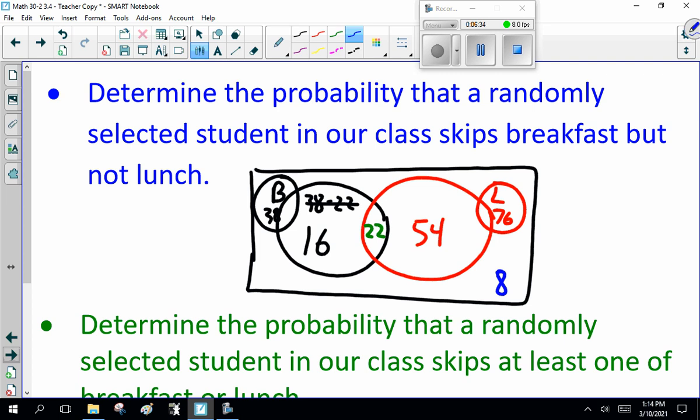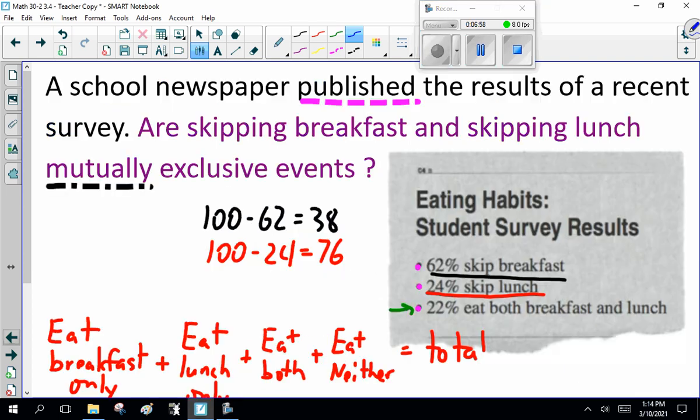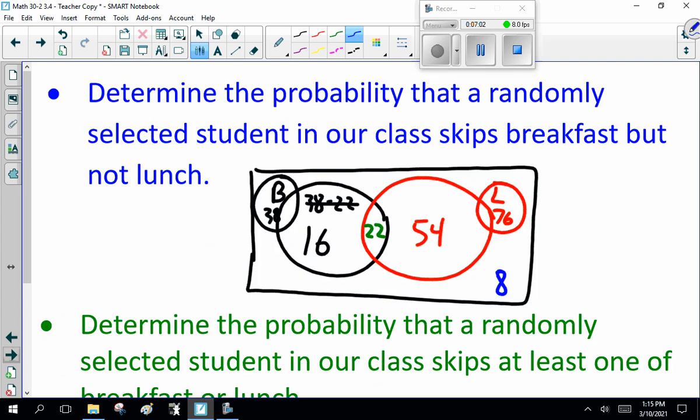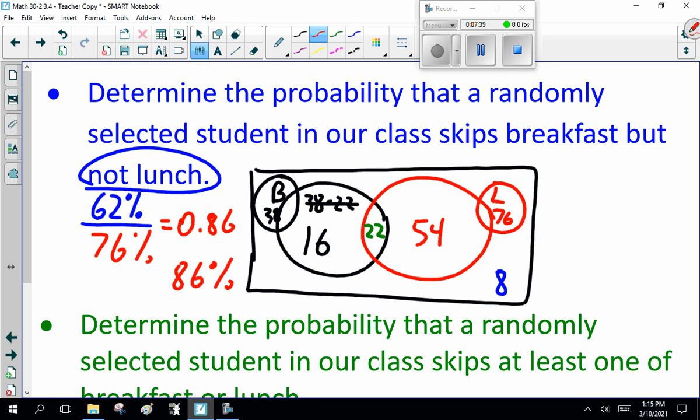Determine the probability that a randomly selected student in the class skips breakfast but not lunch. So, how many skip breakfast? 62% skip breakfast. So that's probability 62%. Now, divided by the outcome we want, which is they eat lunch but not lunch—that means if they skip lunch, they can eat lunch. That's 76%. So what's the probability that they skip breakfast? 62% divided by the probability that they don't skip lunch, 76%, which is 0.86 or 86% chance they skip breakfast but not lunch.